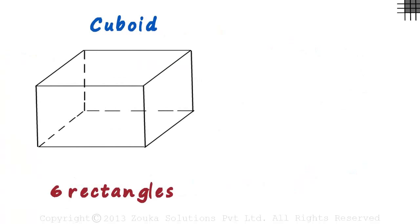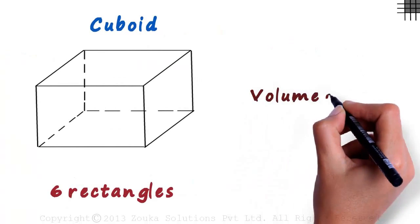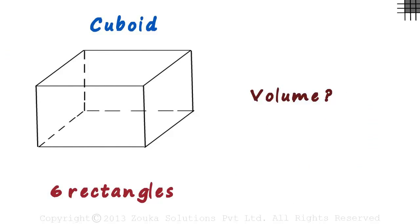But wait, what is its volume then? Simply put, it is the amount of space it occupies. Another way of looking at it is the amount of space contained within the shape.